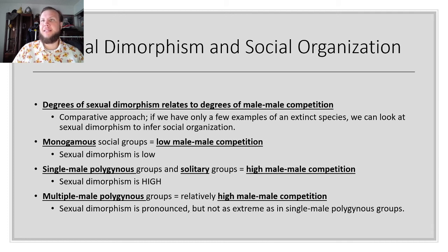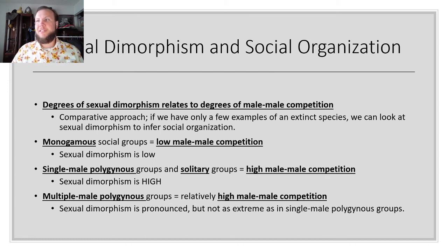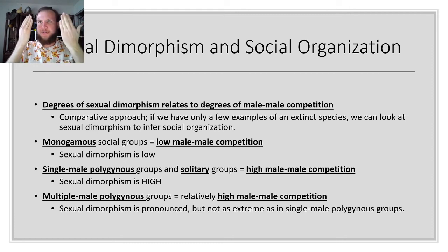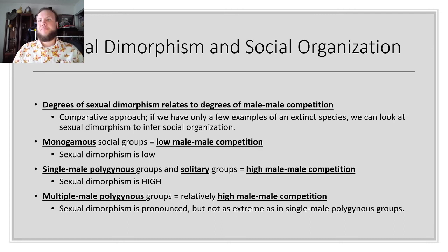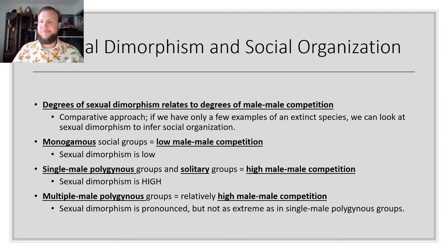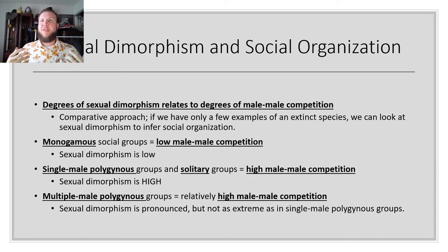That's why silverback gorillas are very large compared to females, and with orangutans, only dominant males have flanges — that's what differentiates them from females and adolescents. Multiple male polygynous groups have relatively high male-to-male competition, so sexual dimorphism is pronounced but not as pronounced as in single male polygynous or solitary groups. That's why male and female chimps differ — male chimps have a lot more muscle mass. Humans have relatively low sexual dimorphism compared to gorillas, consistent with our more monogamous social tendencies.